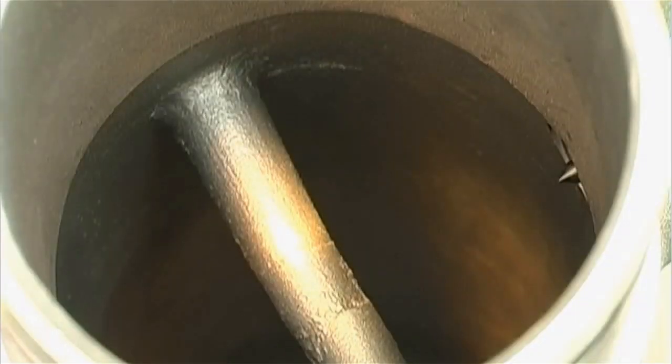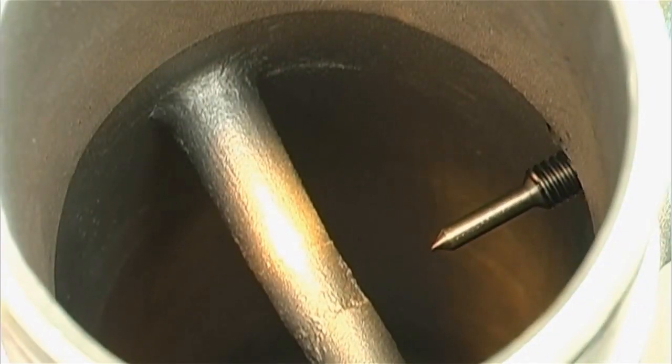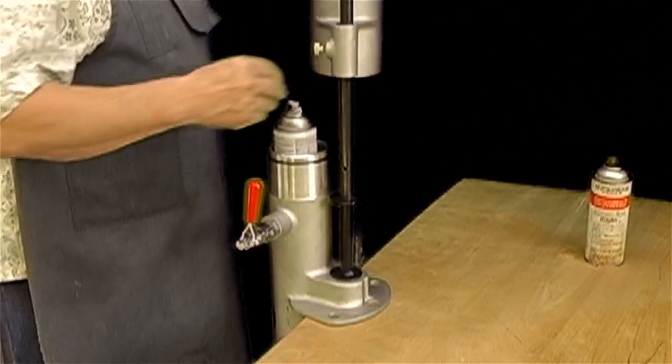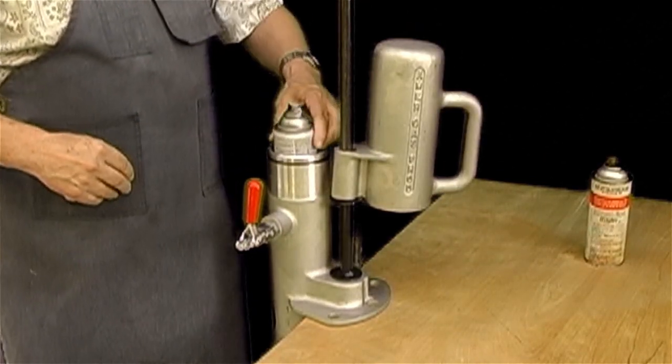Pull down on the handle, and a hardened piercing tool will puncture the can. Return the lever to the upright position to extract the tool from the empty aerosol can.